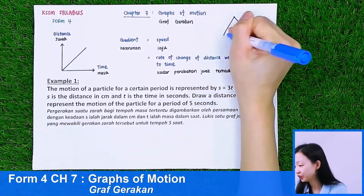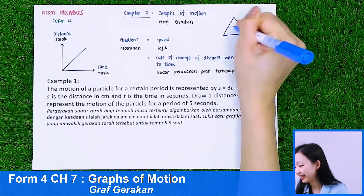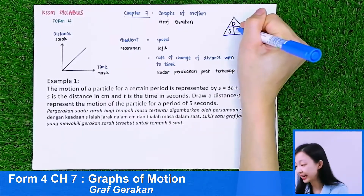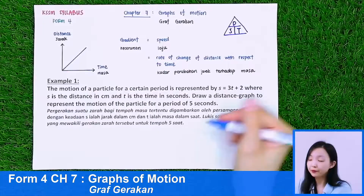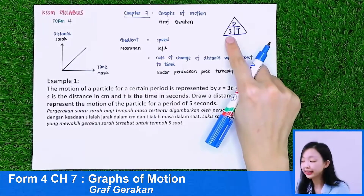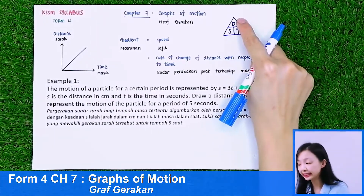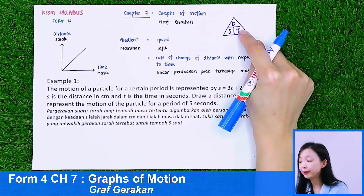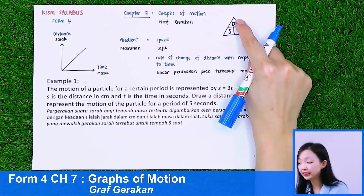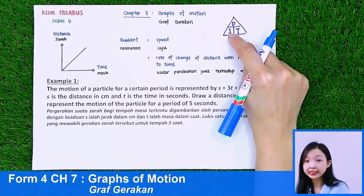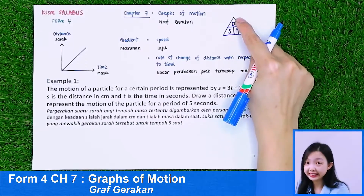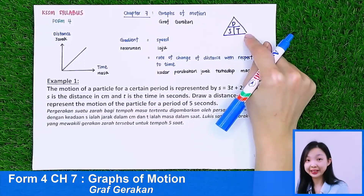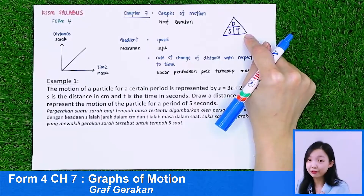In Form 2, you learned about this triangle. D represents distance, S represents speed, and T represents time. When you want to find the speed, you use distance over time. When you want to find the time, you use distance divided by speed. When you want to find the distance, you use speed times time.